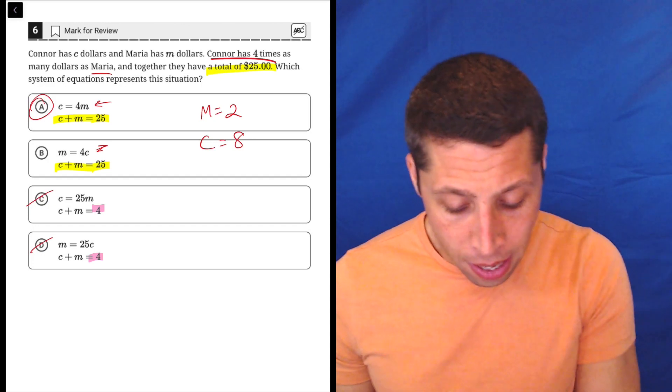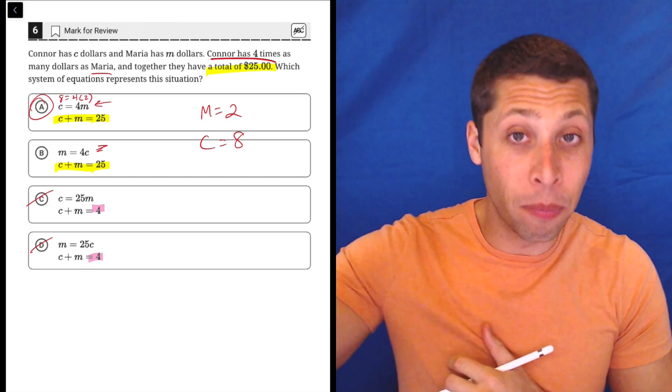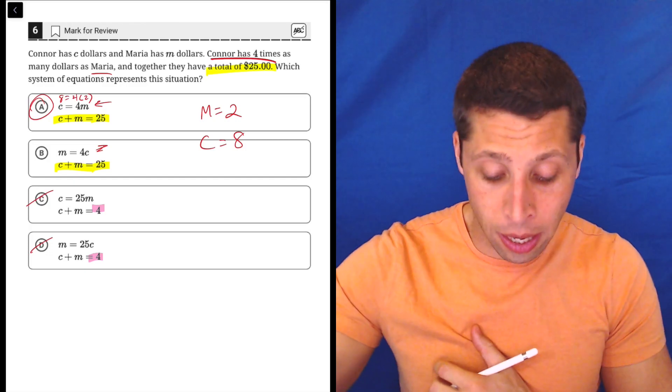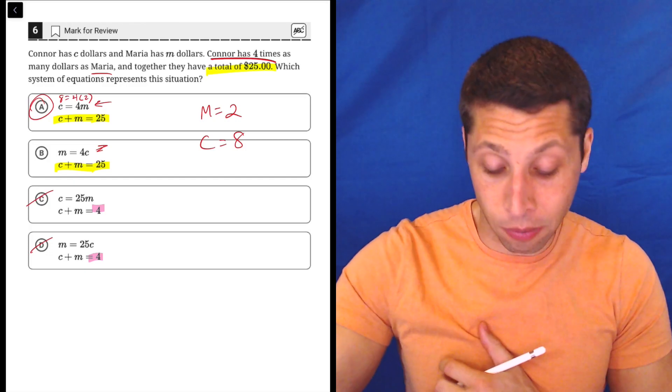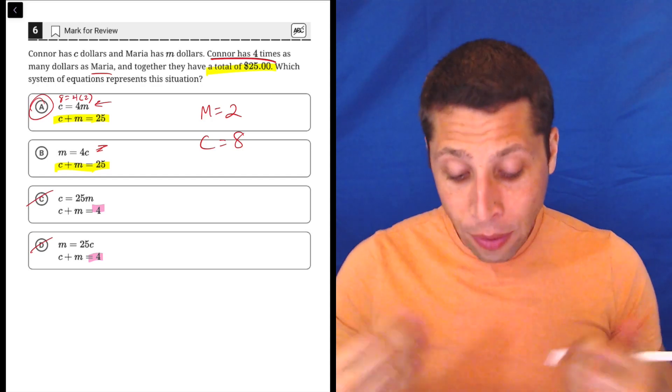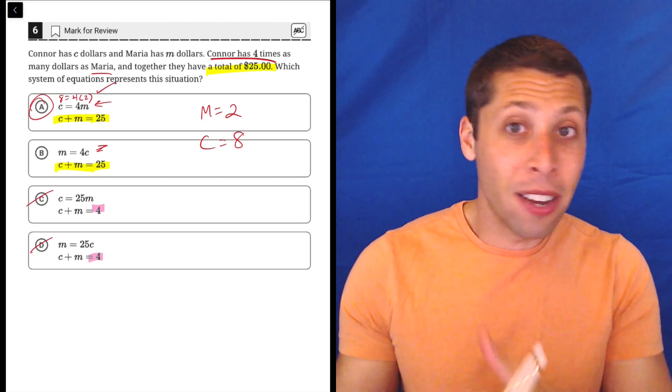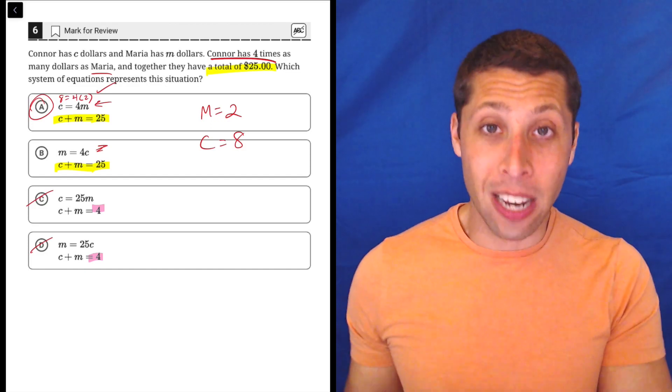So in this case, if I do choice A, I would have 8 is equal to 4 times 2, right? The point that we made up for Connor and Maria, Connor is 8 so that's why I plugged it in for C and Maria is 2 so that's why I plugged that in for M. Now that makes sense. 8 is equal to 4 times 2. So that mini equation that we just made fits both the story and the numbers that we used.